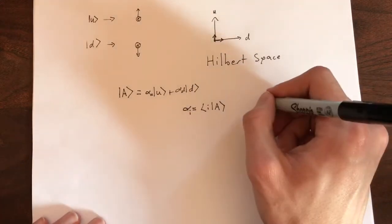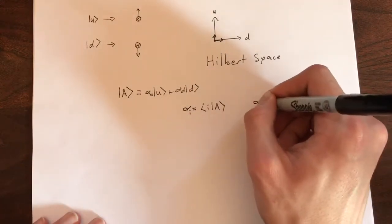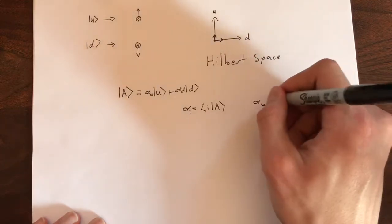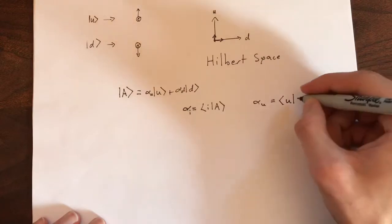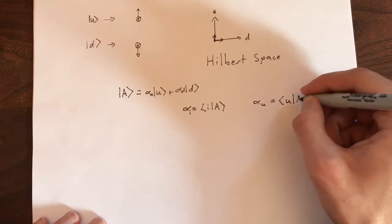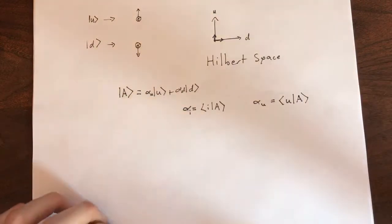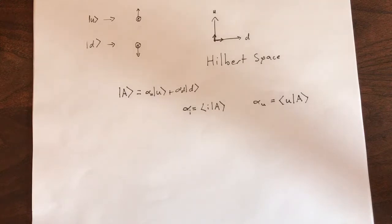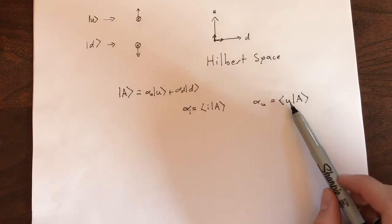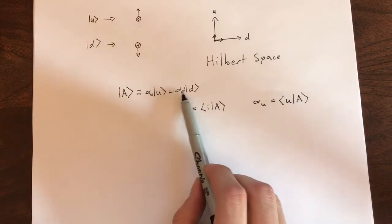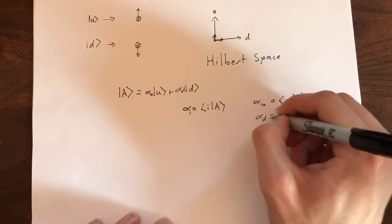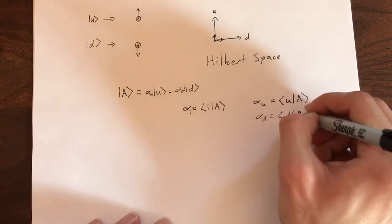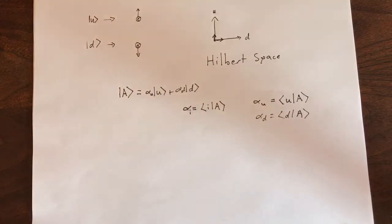So, for instance, if we wanted to find the up component, it would be the inner product of the up vector with our full vector. So, this shows how much of our state A is pointing up. And likewise, this expression shows how much of spin state A is pointing down.